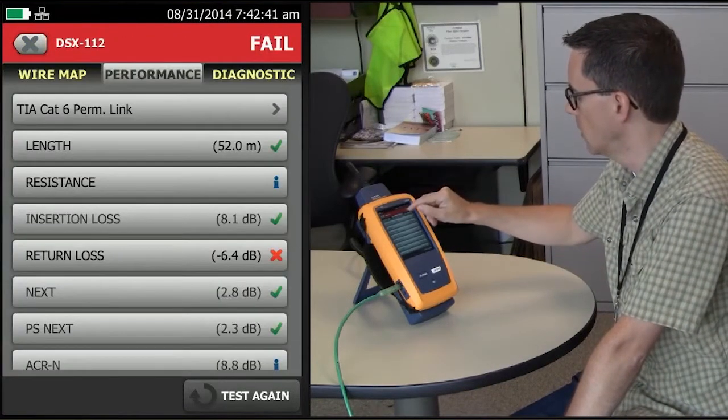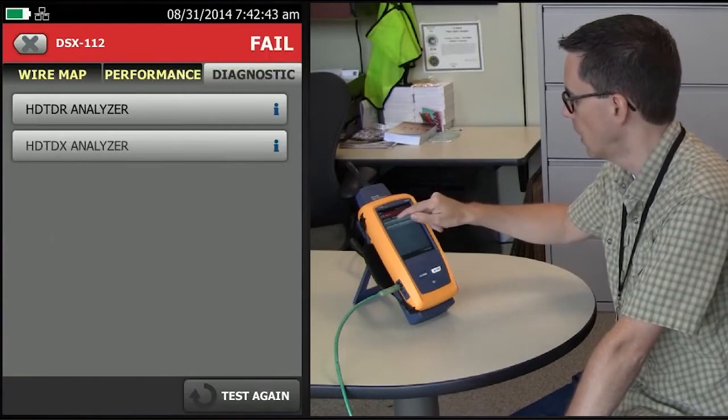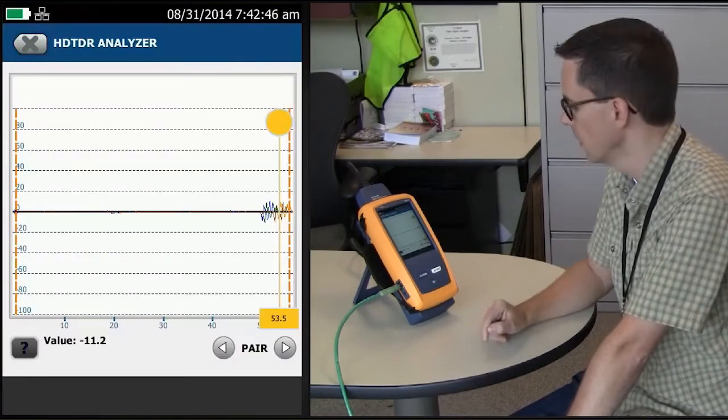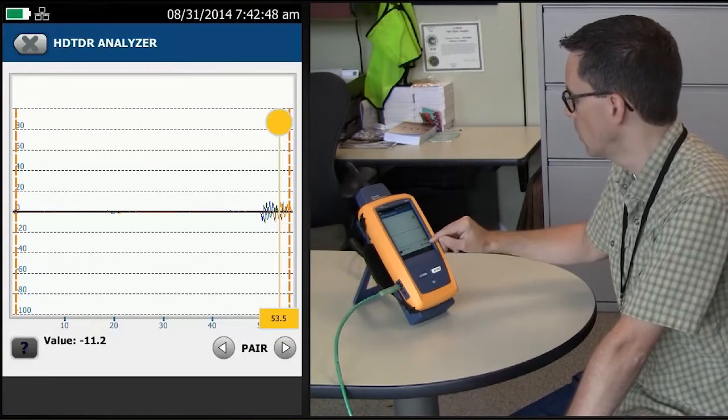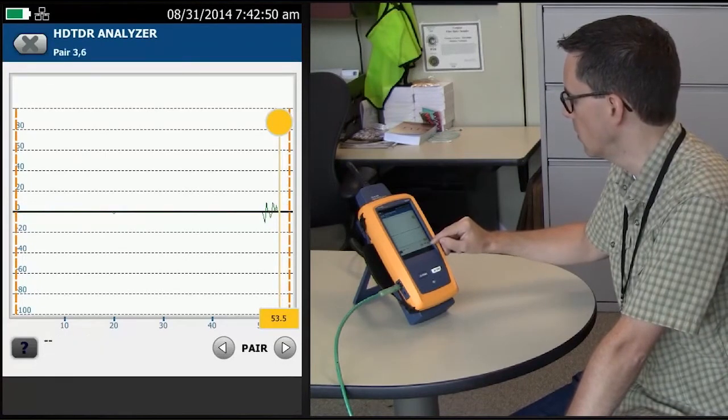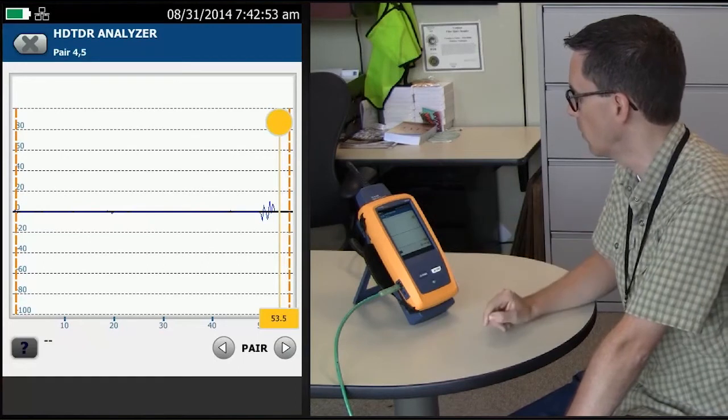We're going to go to our Diagnostic, our High Definition Time Domain Reflectometer. And I'm going to go to my shortest pair, because that's going to give me the most accurate distance to where the water is, which is 4-5.